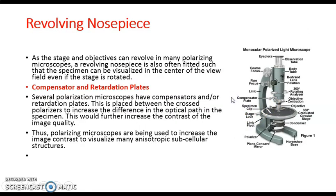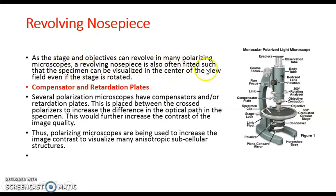Next is the revolving nosepiece. The revolving nosepiece helps in removing the objective. As the stage and objectives can revolve in many polarizing microscopes, a revolving nosepiece is fitted such that the specimen can be visualized in the center of the view field even when the stage is rotating.